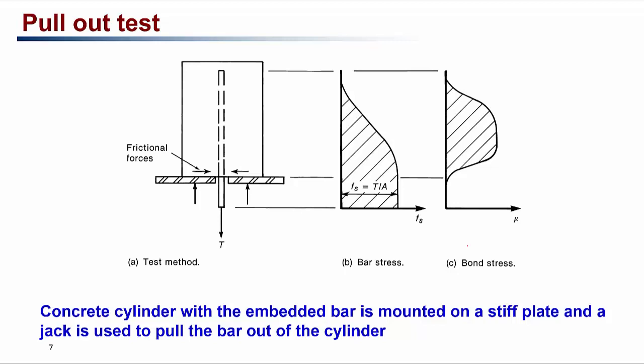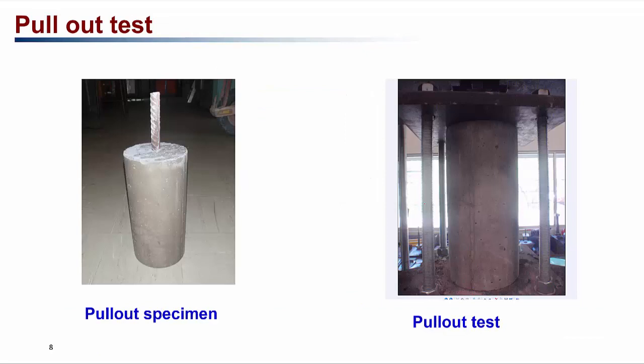To understand the bond strength between steel and concrete, we normally do a test called the pull-out test. A steel bar is embedded in a concrete cylinder, and then we try to pull it out. The concrete cylinder with the embedded steel bar is mounted on a steel plate and a hydraulic jack is used to pull the bar out. The tension force is applied on the steel bar, and the tensile stress in the bar and the bond stress that develops along the bar can be measured.